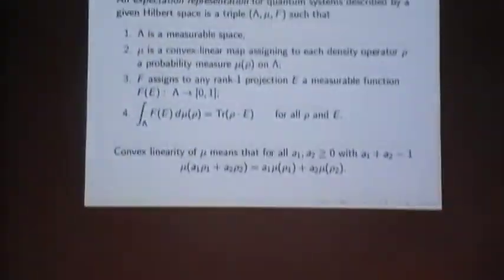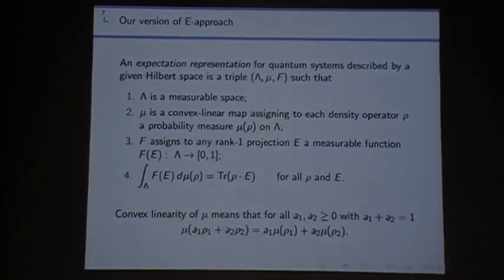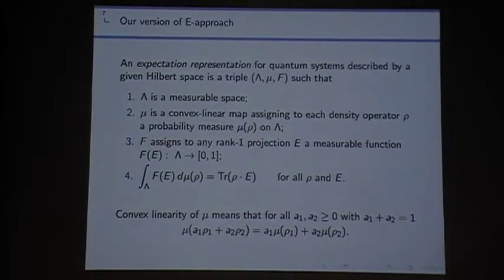So here is, it's probably I don't have enough time to explain, but this is the optimized version of this expectation approach. So you have a measurable space. This is where the hidden variables take values. Without loss of generality there is one hidden variable which takes values in this measurable space lambda.